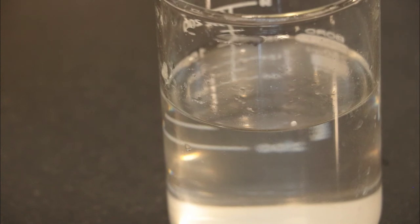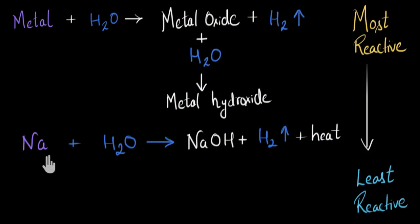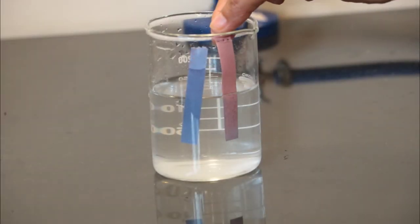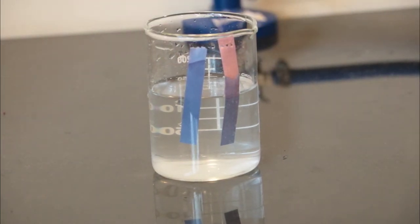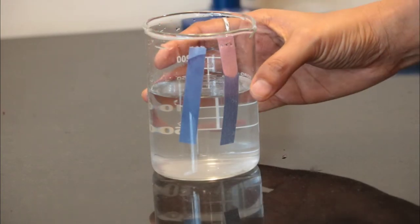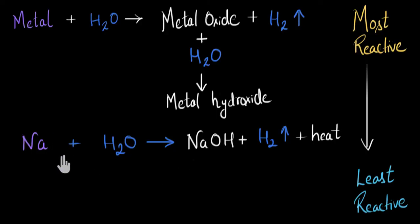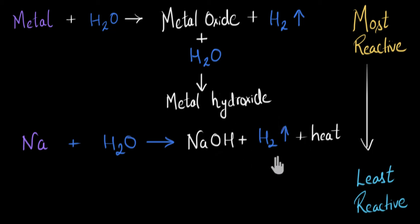Notice how quickly the sodium metal gets used up — that's because sodium reacts very violently and quickly with water, converting into sodium hydroxide, which is now dissolved in the water. To test this, since sodium hydroxide is basic in nature, if we add red litmus paper into it, you can see the color changes to blue. This proves the solution is basic and contains sodium hydroxide. So in this reaction, sodium reacts even with cold water, producing sodium hydroxide while releasing hydrogen gas and a lot of heat energy, which can even ignite the hydrogen gas.